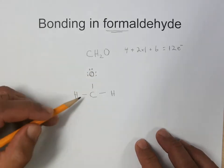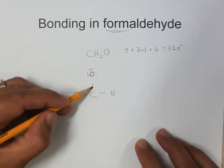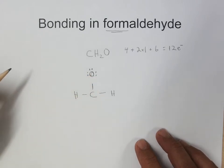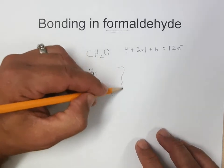And at that point, we've used two, four, six electrons to connect everything up, six electrons to complete the octet on the oxygen. So we've used all twelve electrons at this stage.